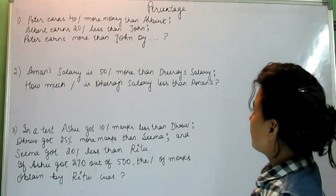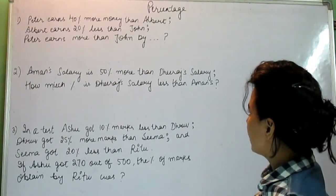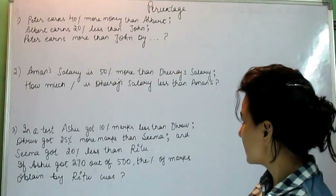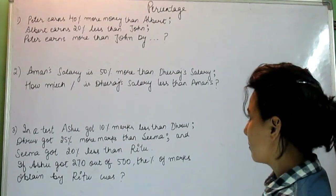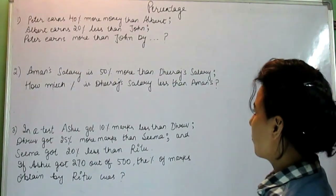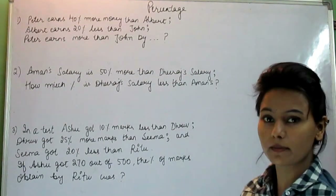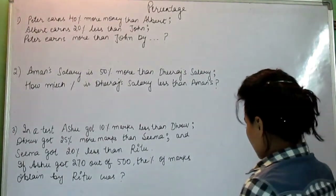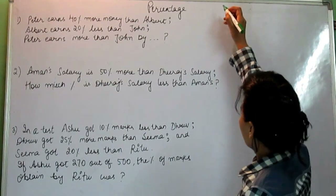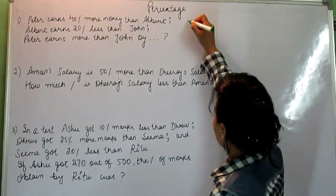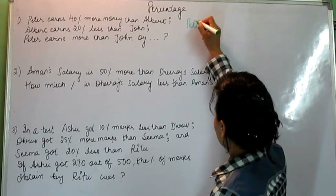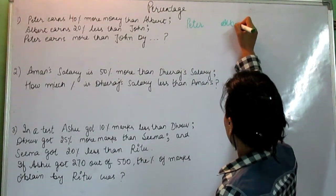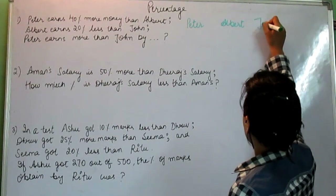The first question is: Peter earns 40% more money than Albert. Albert earns 20% less than John. And Peter earns more than John by how much? This is the question involving Peter, Albert, and John.